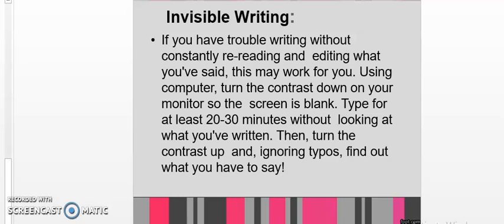The last but not the least is invisible writing. If you have trouble writing without constantly rereading and editing what you have said, this may work for you. Using computer, turn the contrast down on your monitor so the screen is blank. Type at least 20-30 minutes without looking at what you have written. Then turn the contrast up. Ignoring typos, find out what you have. So this is the easiest way. You do not see your computer screen because you have turned off your contrast, turn down your contrast, and you are just writing anything that comes to your mind about a topic. And then you increase the contrast and then you can see what have you written. And then you edit that writing. This is a very, very interesting way of generating ideas regarding the topic.